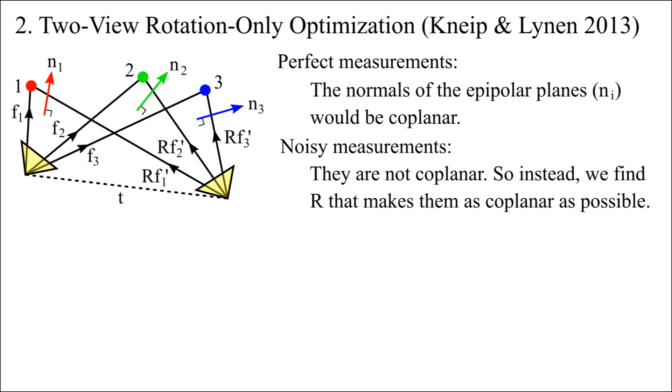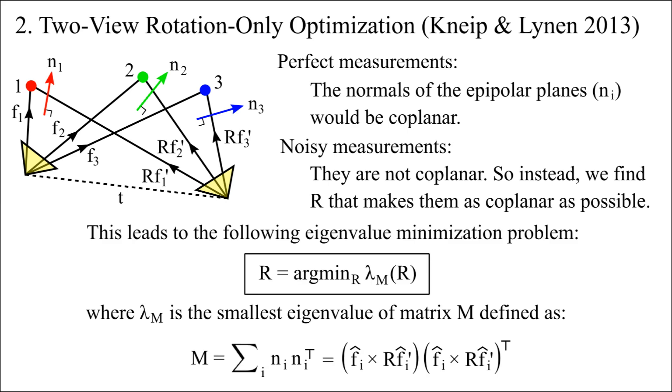So instead, we find the rotation that makes the normals as coplanar as possible. This leads to the following eigenvalue minimization problem. Here, λm denotes the smallest eigenvalue of matrix M defined as follows. Notice that this problem does not explicitly involve the translation vector.